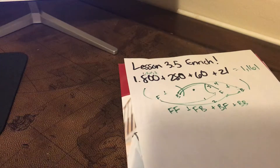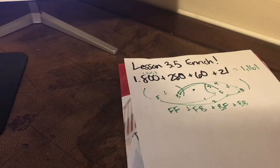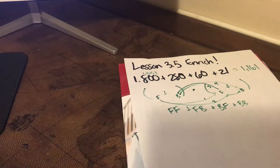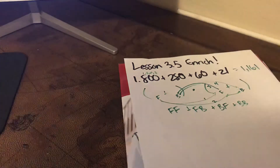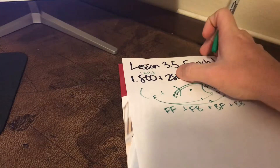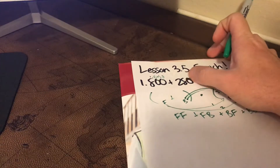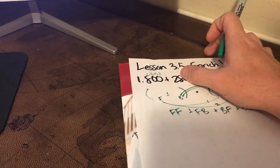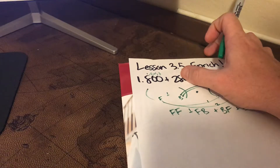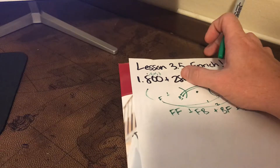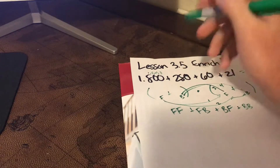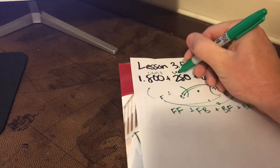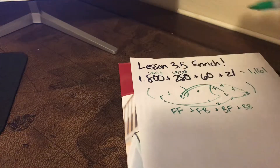That's going to come in handy when we look at 280. What are some ways I can make 28? There's lots of ways, but we can do one times 28, and then maybe an easier one — maybe seven times four, something we already know. So: one, four, seven, 28.